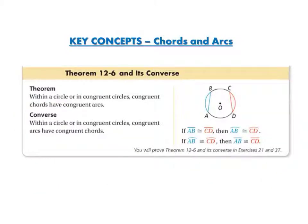Here is theorem 12-6 and its converse. The theorem says within a circle or in congruent circles, congruent chords have congruent arcs. So if chord AB is congruent to chord CD, then arc AB is congruent to arc CD.